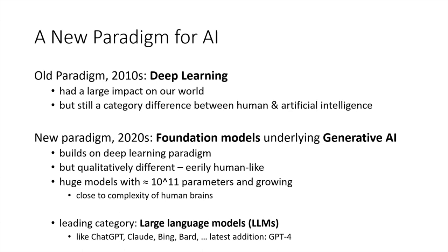If you interact with something like ChatGPT, in some sense it feels eerily human-like. Perhaps one way to understand that is that the models underlying these generative AI systems are so large that their complexity is really starting to approach the complexity of the human brain. The leading category for now are large language models — things like ChatGPT, which we see in every other news article these days, or Claude, or Bing, or Bard.